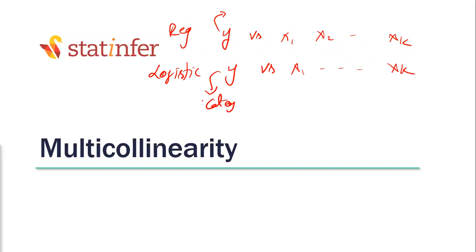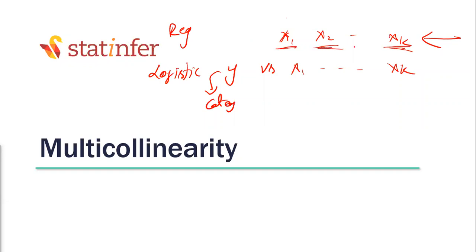Do you remember when we were discussing multicollinearity in linear regression, we said: forget about the target variable for some time. Do you think that's fair? Why is it fair? Why don't we really require the target variable when dealing with, detecting, or treating multicollinearity? Because multicollinearity is something related to predictor variables only.